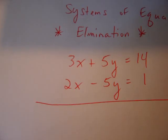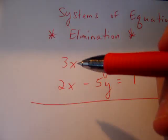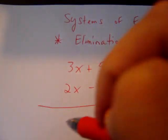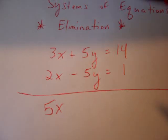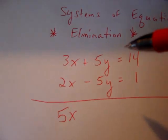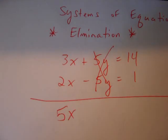Opposite numbers become 0 when you add. So therefore, this is just a simple addition. Here we go. 3x plus 2x gives us 5x. Plus 5y minus 5y.